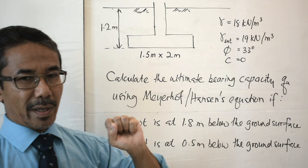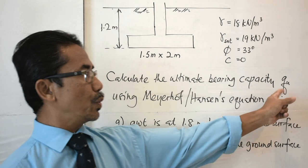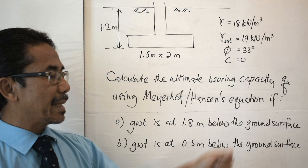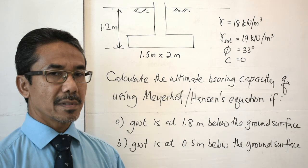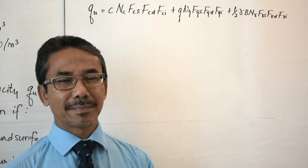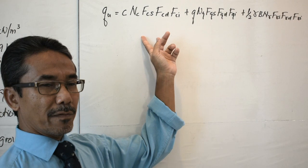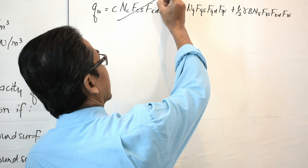The problem is to calculate the ultimate bearing capacity Q_u using Meyerhof-Hansen's equation for two scenarios: (A) groundwater table at 1.8 meters below the ground surface, and (B) groundwater table at 0.5 meters below the ground surface.